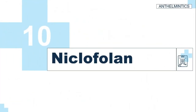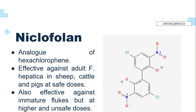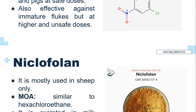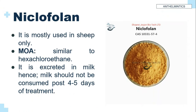Niclofolan is an analogue of hexachlorophene. It is effective against Fasciola hepatica in sheep, cattle, and pigs at safe doses, but is mostly used in sheep only. Its mechanism of action is similar to hexachloroethane. It is excreted in milk.